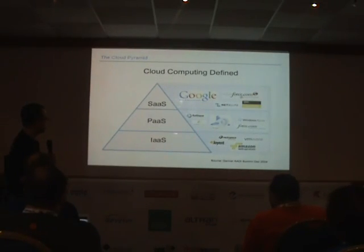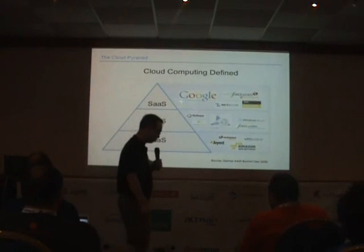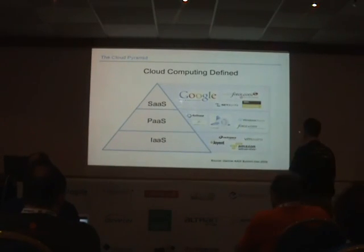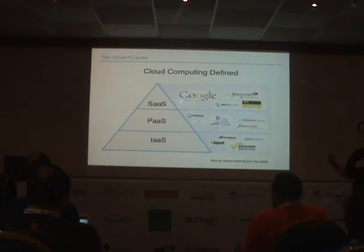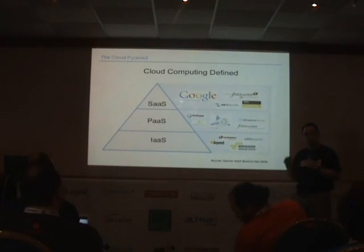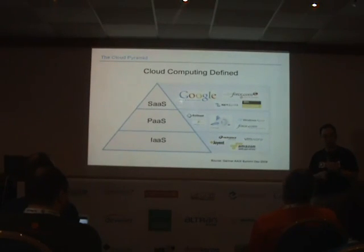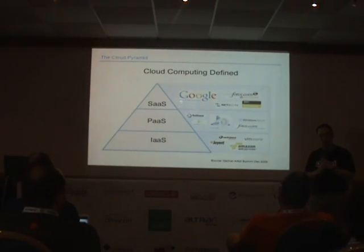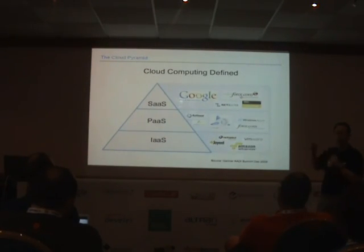At the very bottom is IaaS — Infrastructure as a Service — where we have the familiar Amazon Web Services. You're renting machines and disks. What they give you is hardware, electricity, networking, and cooling — that's all you get. Everything else above that is your responsibility: databases, operating system, web server, load balancing, monitoring, reporting — all of those things. Whereas with Software as a Service, you don't have to do anything except log in.